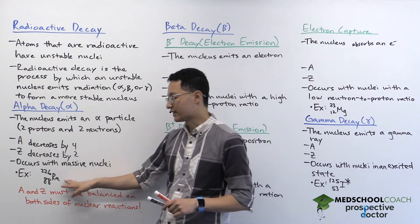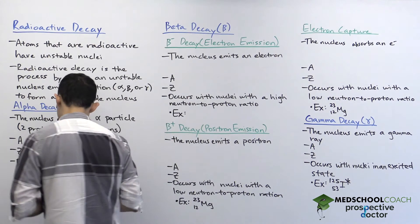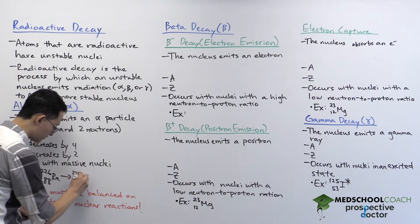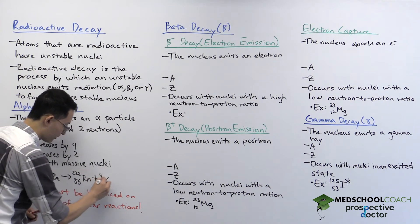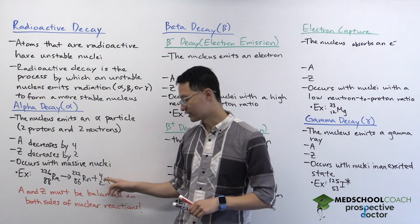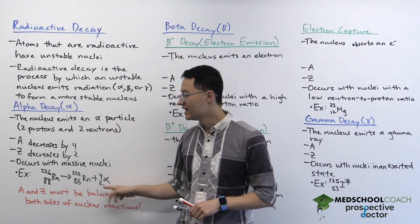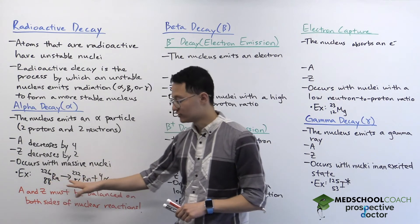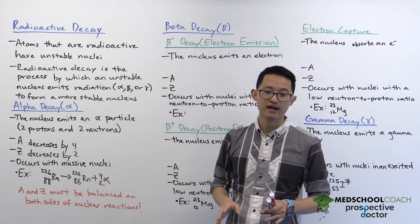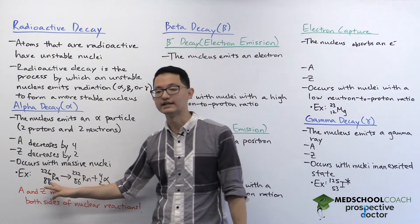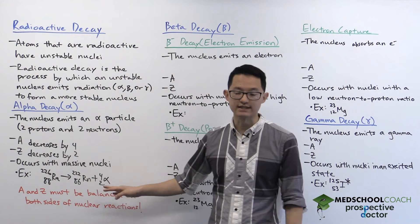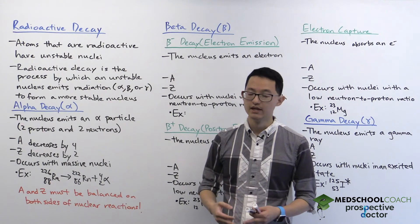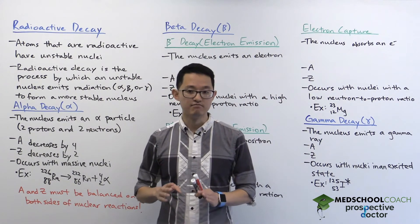For example, we can take a look at 226 radium undergoing alpha decay. In undergoing alpha decay, it's going to form 222 radon and an alpha particle. You can see here that we're denoting the alpha particle with a mass number of four and atomic number of two, which matches the description. You can also see that we're going from radium to radon — that's a change in the identity of the element. That should not be a surprise because our atomic number is decreasing from 88 to 86. The identity of an element depends on the atomic number, so if the atomic number changes, the element must also change.